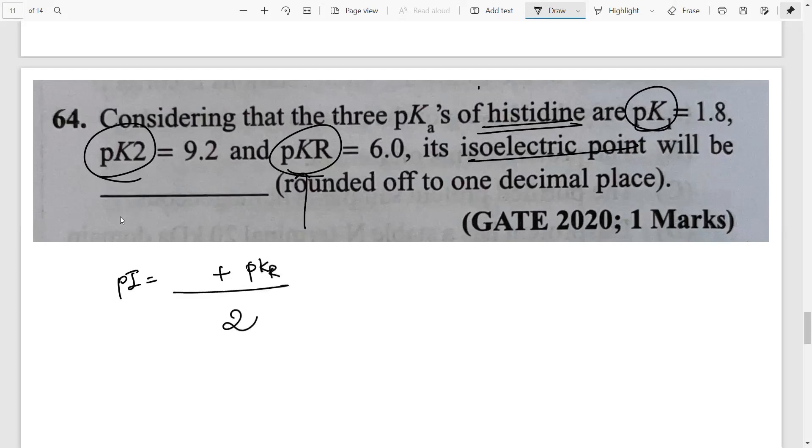Along with that now should you take pK1 or you should take pK2. Now because histidine is a basic amino acid, you will take the larger value. So the larger value is the pK2. So that way if you take an average of the two you will get this answer.